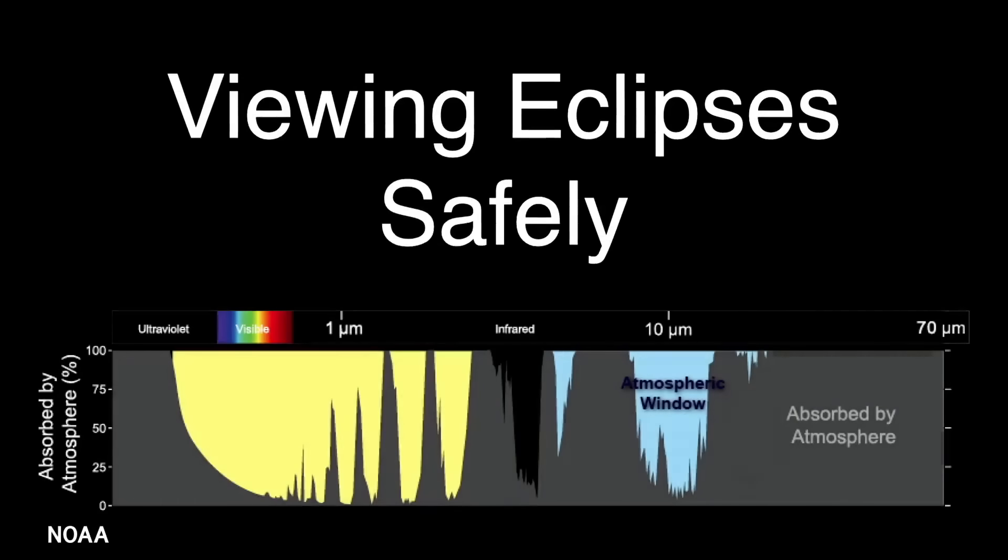How do we observe the sun and not harm our eyes? We don't have to worry about x-rays or extreme ultraviolet, since those are filtered by our atmosphere. But we do have to worry about the intense visible and infrared light, which does make it through our atmosphere.